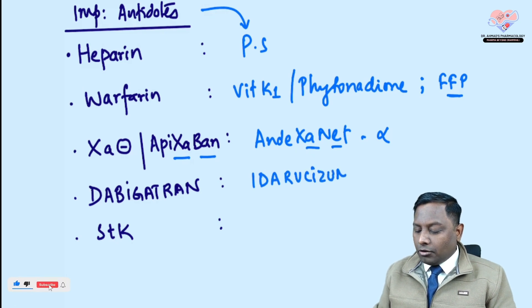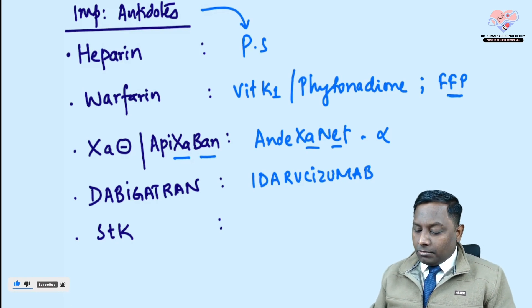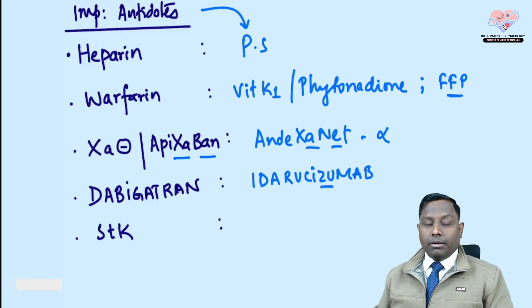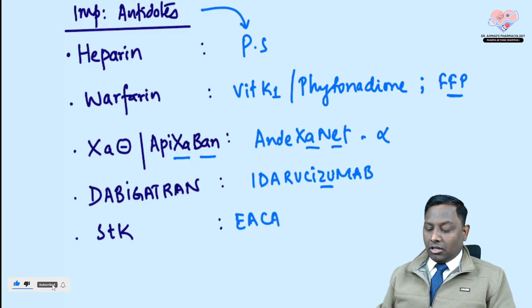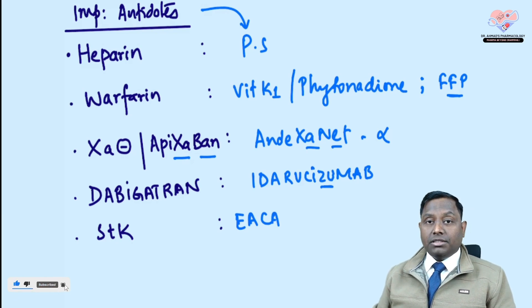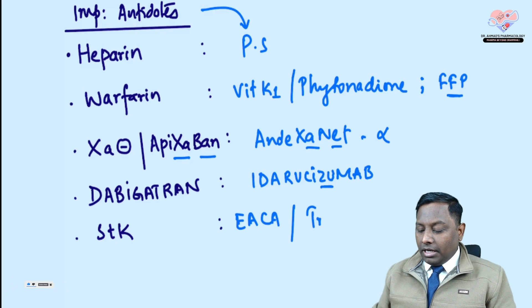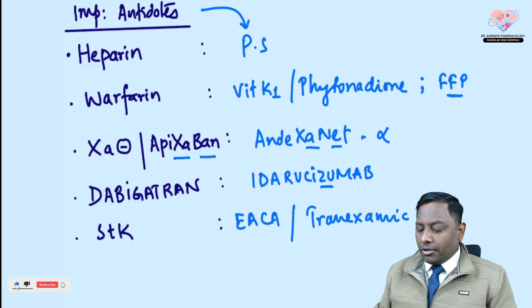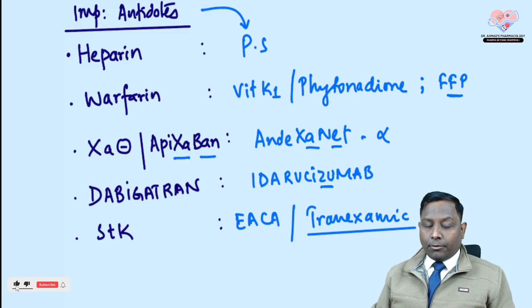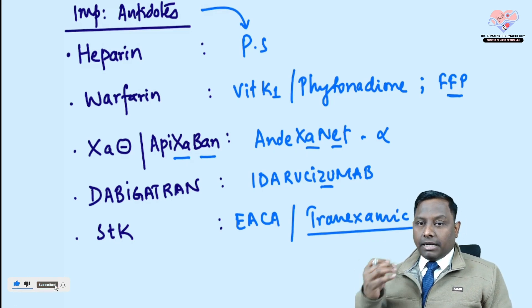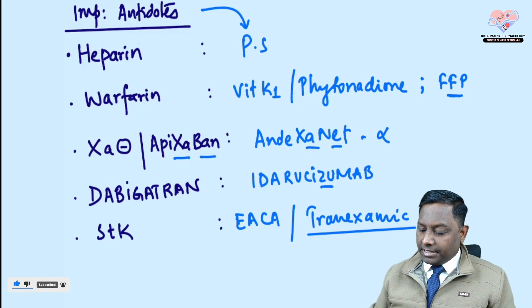For dabigatran, we use idarucizumab — 'daba ke daru idarucizumab' — it is a humanized monoclonal antibody. For streptokinase, we apply epsilon amino caproic acid. If that is not in the options, you can go for tranexamic acid. Both are anti-fibrinolytics, since streptokinase is a fibrinolytic.